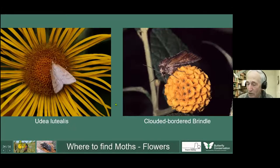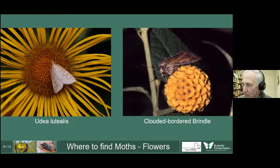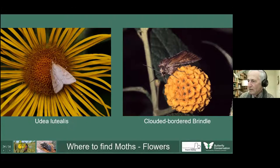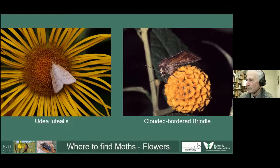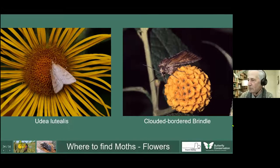Another place to look for moths is on flowers — the flowers that butterflies have been visiting during the day are worth examining at night. Here's a small Udea lutealis feeding on a flower at night, and a Clouded-bordered Brindle feeding on Buddleja globosa. It's always worth checking garden plants at night with a torch. But if we really want to survey moths, we've got to attract them to us some way.